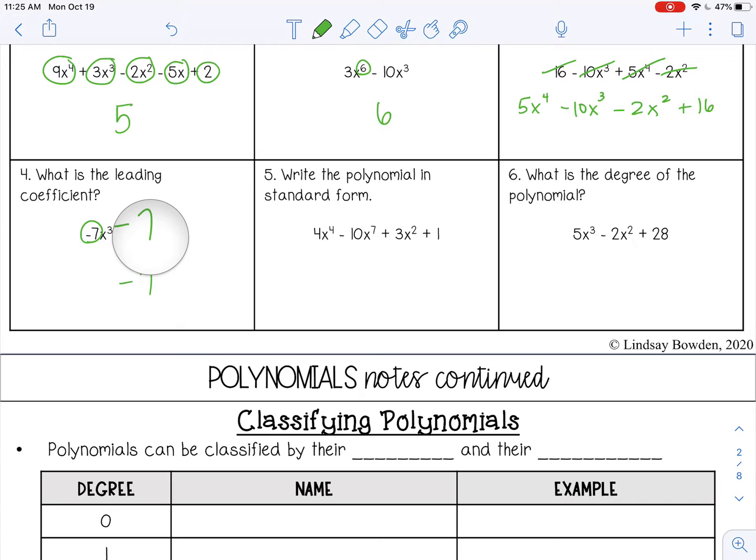Number 5, write the polynomial in standard form. All right, so negative 10x to the 7th power plus 4x to the 4th power plus 3x squared, and then your constant comes last, plus 1.